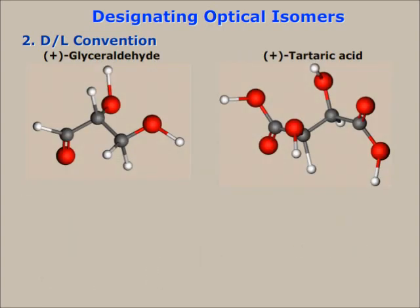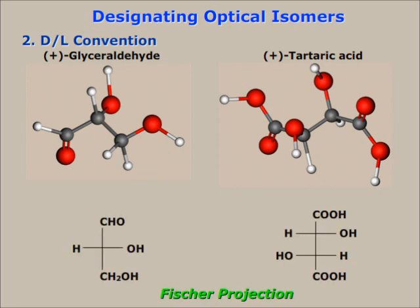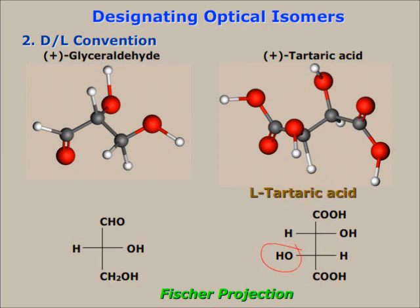The simplest way to understand and designate optical isomers with the D and L convention is to follow some simple steps. Draw the Fischer projection. Focus on the penultimate carbon atom and see whether the substituent on that carbon is on the right or left. If the substituent is on the left, then it is the L-isomer; otherwise it is the D-isomer.